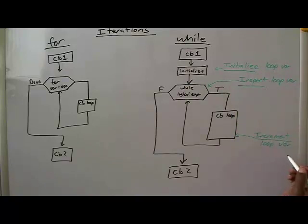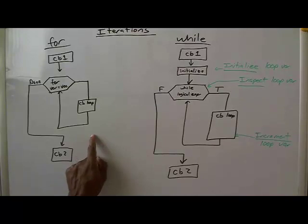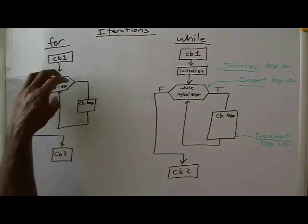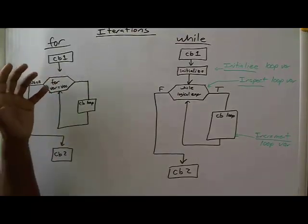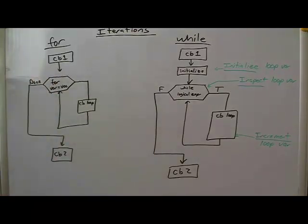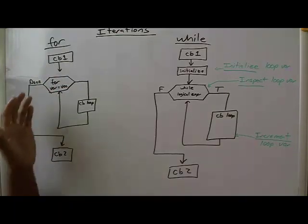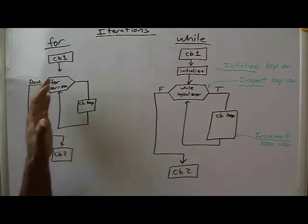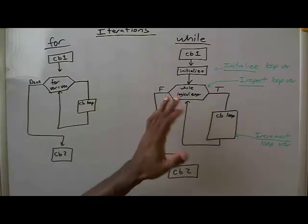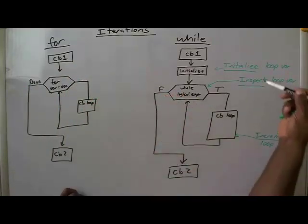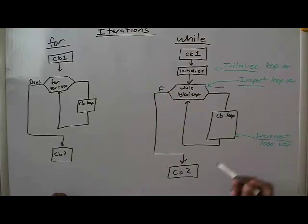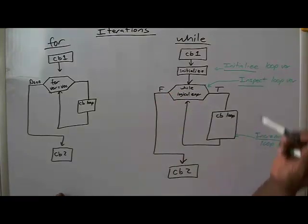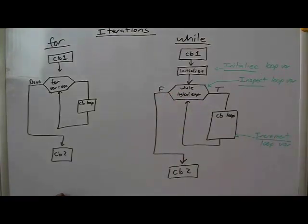So you have three things: initialize, inspect, and increment your loop variable. The contrast to the for loop is that the for loop did all of that for you. This is why I refer to the for loop as the training wheels for iteration — with the while loop, we're taking off the training wheels, and now you have to do these three things yourself.